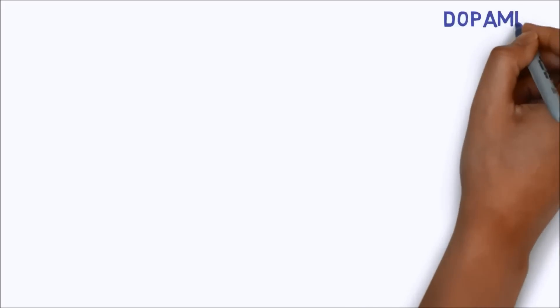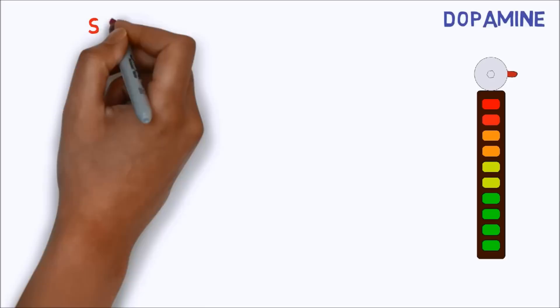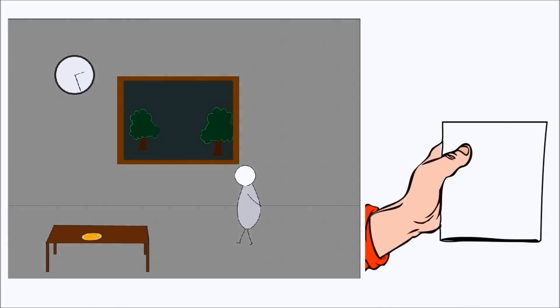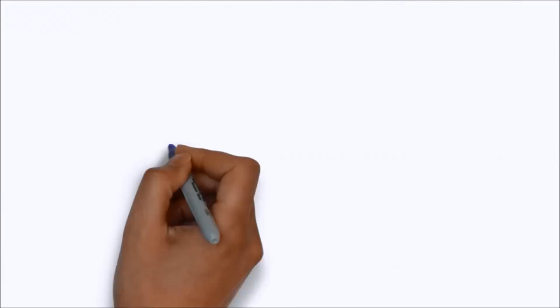Next is dopamine. This chemical stimulates desire and reward by triggering an intense rush of pleasure. To get rewarded with the feelings of enjoyment and pleasure, it motivates us to do certain activities, in this case, sex. Couples often show the signs of surging dopamine: increased energy, less need for sleep or food, focused attention and exquisite delight in smallest details of the relationship.